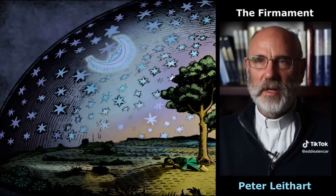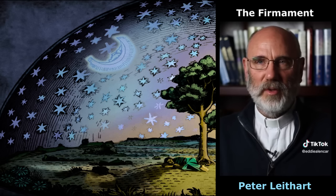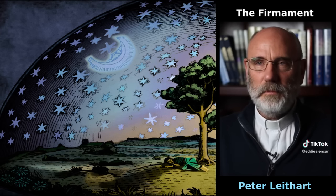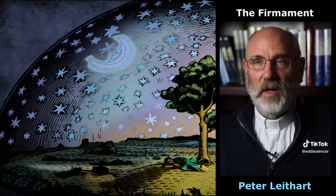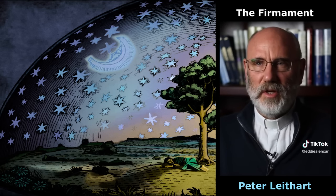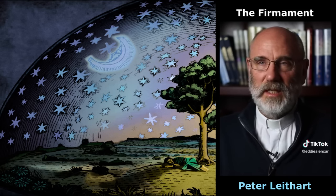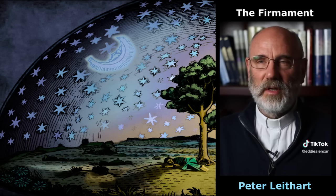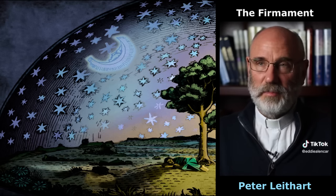Then he creates the firmament and inserts it between the waters above and the waters below, forming an above and a below — a world where there are waters in heaven and waters on earth. That distinction runs through the entire Bible. When people go into heaven, they see a sea of glass in front of God's throne, and those are the heavenly waters.